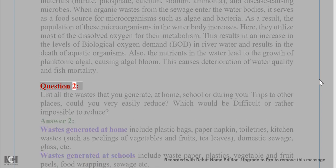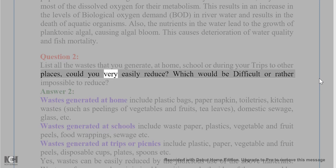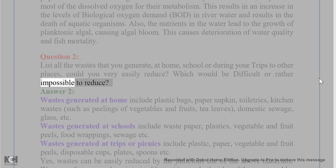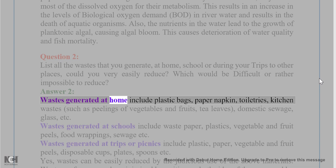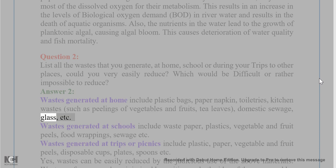Question 2: List all the wastes that you generate at home, school, or during trips to other places. Which could you easily reduce, and which would be difficult or impossible to reduce? Answer: Wastes generated at home include plastic bags, paper napkins, toiletries, kitchen wastes such as peelings of vegetables and fruits, tea leaves, domestic sewage, glass, etc.